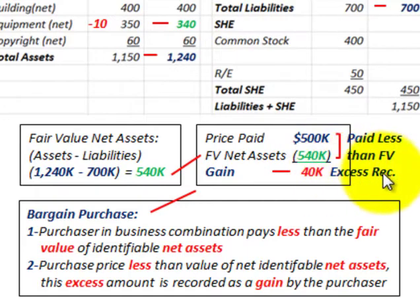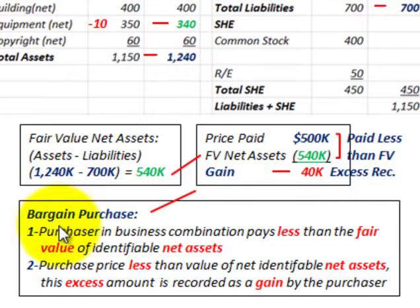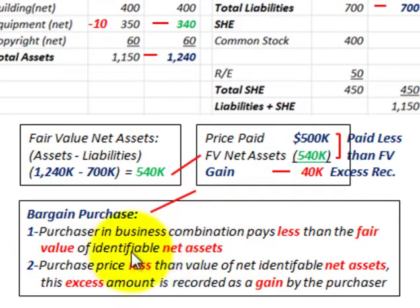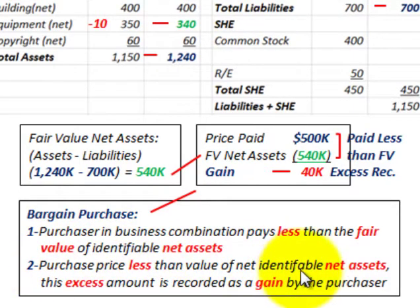This is the excess they received based on what they had paid. To review: in a bargain purchase, the purchaser in the business combination pays less than the fair value of the identifiable net assets received. The purchase price is less than the value of the net identifiable assets. This excess amount is recorded as a gain to the purchaser.